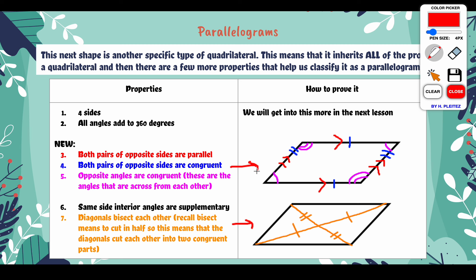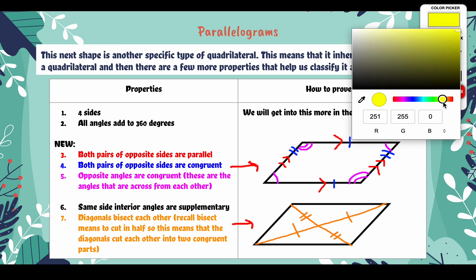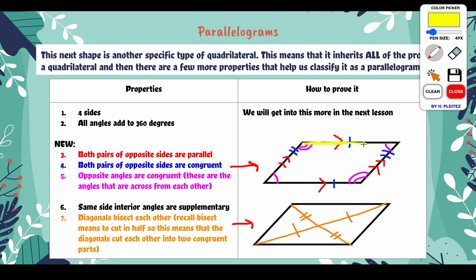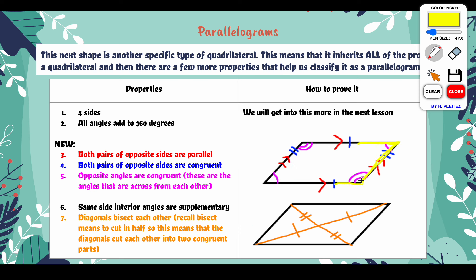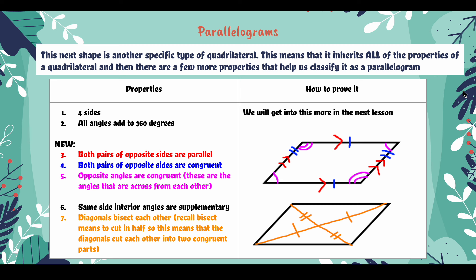The next property is that same-side interior angles are supplementary. This comes from what we know about parallel lines. If we know these two sides are parallel, we think of our Z angles, F angles, and C or U angles. I see this U shape — those are my same-side interior angles and I know those add to 180. Same thing on the other side: the C shape tells me those two angles add to 180.